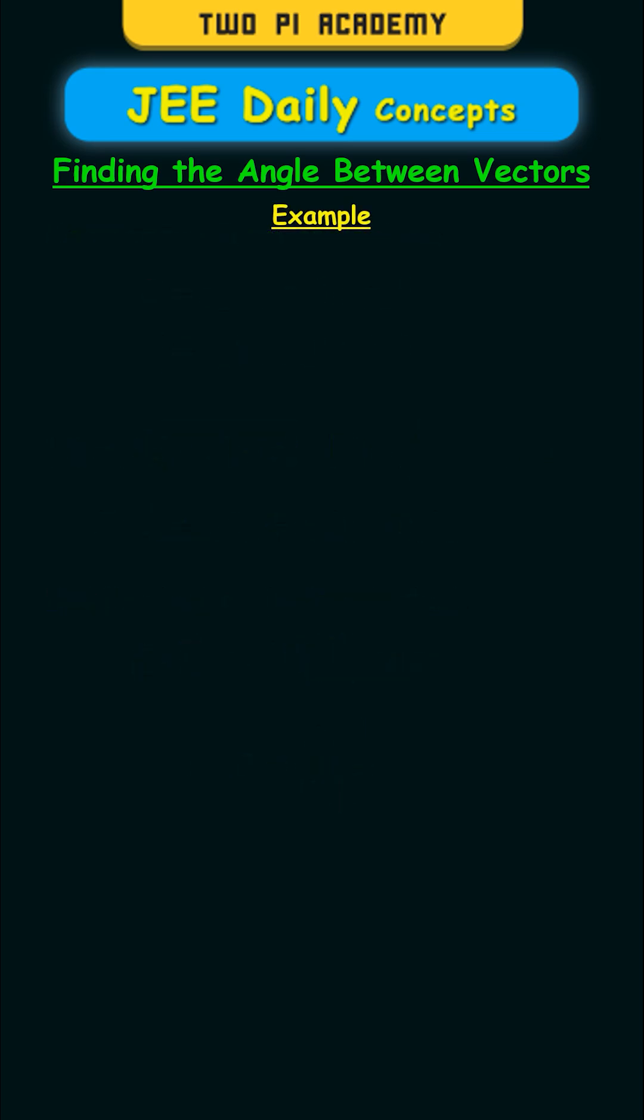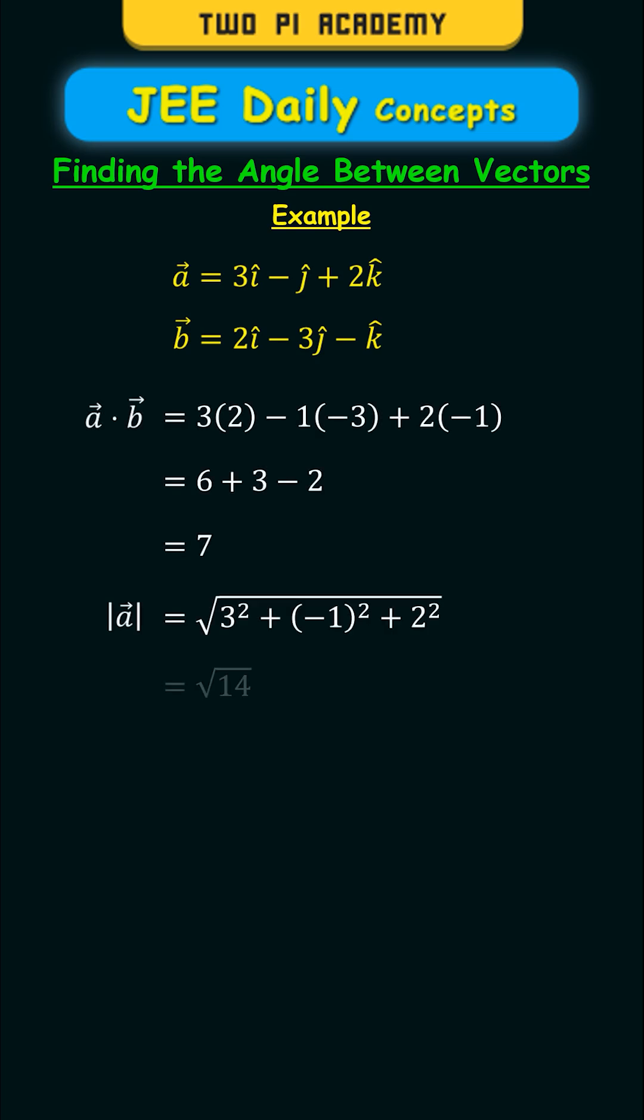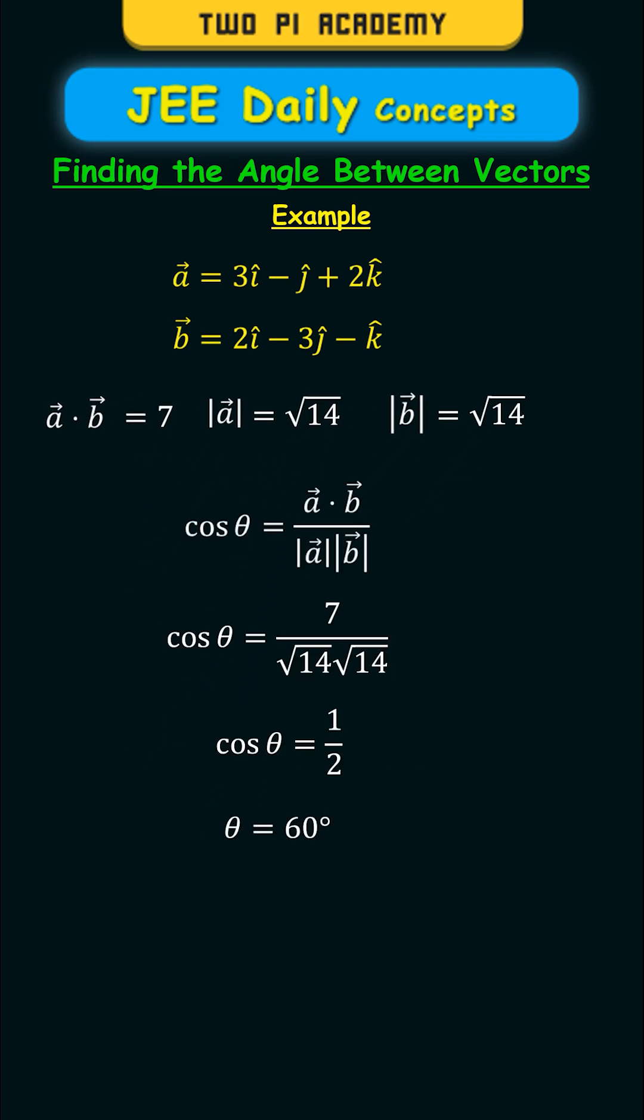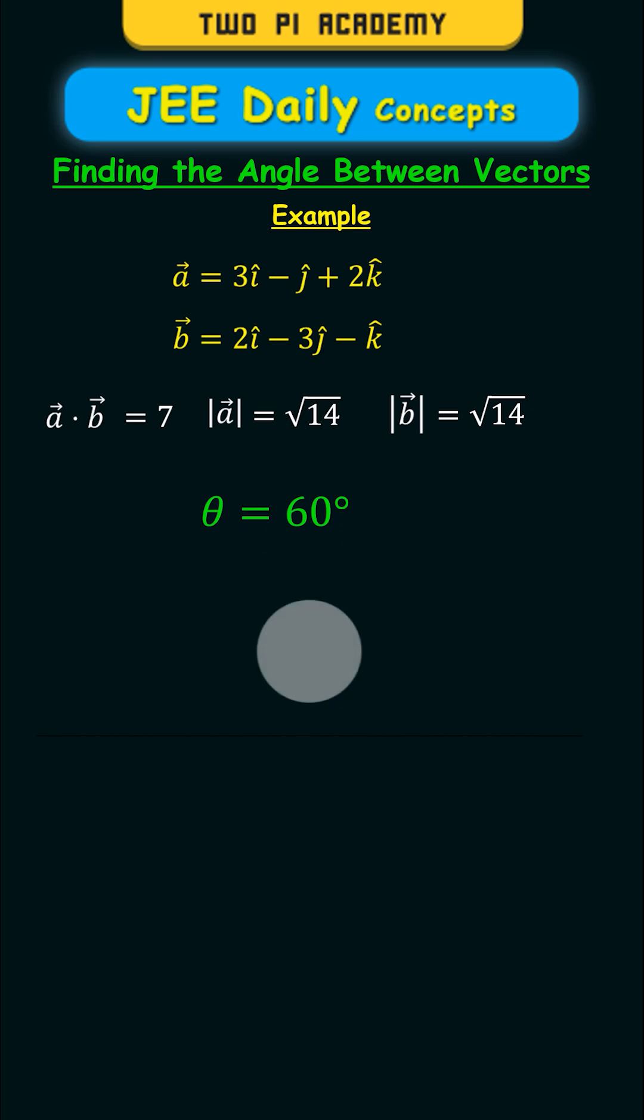For example, consider the following vectors, vector a and vector b. Then first you will calculate the dot product of the vectors and then the magnitude of vector a and magnitude of vector b. By doing them you get the cos theta as 1 by 2, which means theta is 60 degrees.